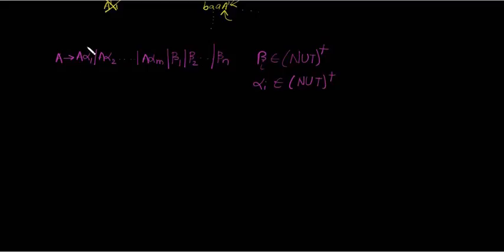But remember one thing: the first symbol of alpha must not be A, and the first symbol of beta must also not be A. So this has to be converted to eliminate left recursion.